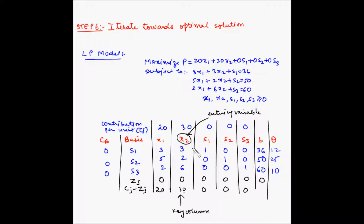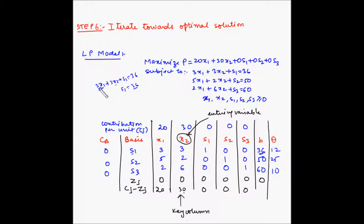This concept has been explained in detail in the video for step number 6, but let us quickly look at this to understand. The first row is the first constraint: 3X1 plus 3X2 plus S1 equals 36. Now, X1 is 0 and X2 is also 0, so S1 equals 36. If S1 becomes 0 and X2 is the entering variable, how many X2s can be produced? Omitting X1, we have 3X2 plus S1 equals 36; S1 becomes 0, so 3X2 equals 36, giving X2 equals 12.